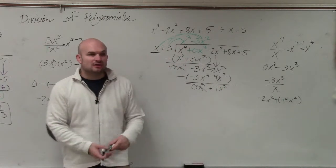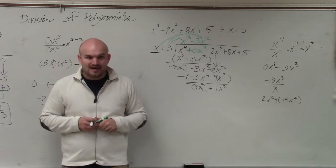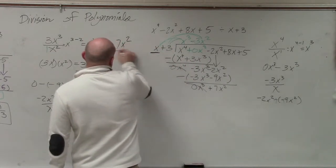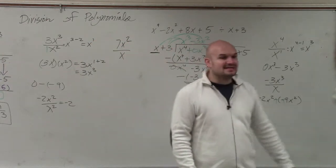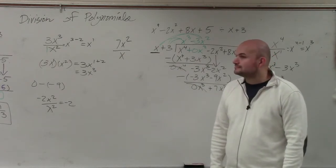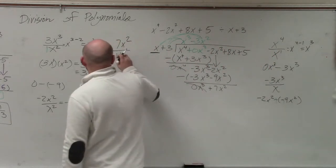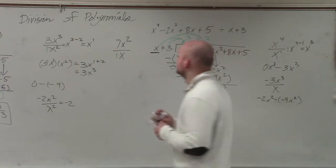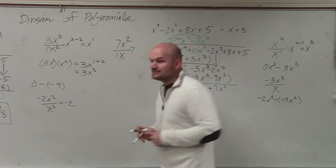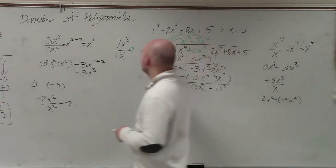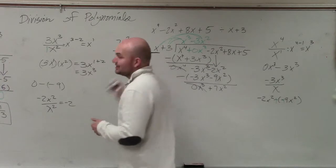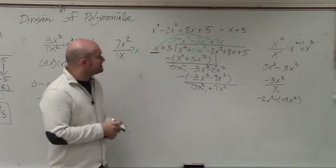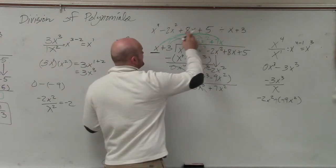So now we do the same process all over again. x goes into 7x squared how many times? Again, write it to the side. How many times does x divide into 7x squared? Well, guys, there's a 1 in front of this x. You can only divide numbers with numbers and variables with variables. So how many times does 1 divide into 7? 7. And then how many times does x divide into x squared? x times, right? x to the first power. So the answer is just 7x. So you put the answer up here.